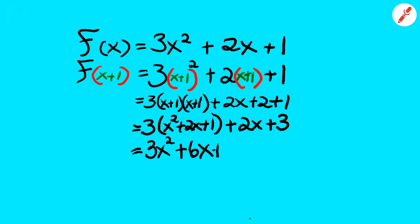Alright, I'm distributing the 3 into the x squared plus 2x plus 1. And then I'm going to add all the like terms together, or I should say combine the like terms.